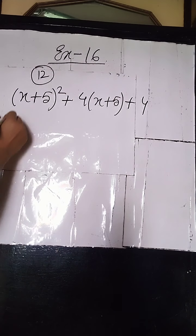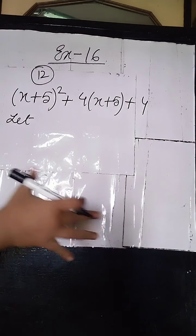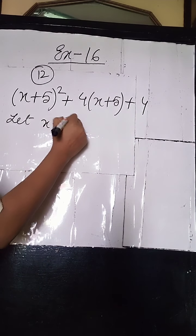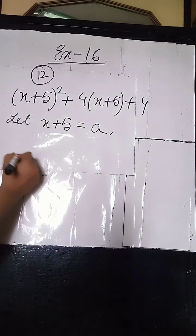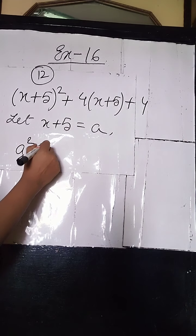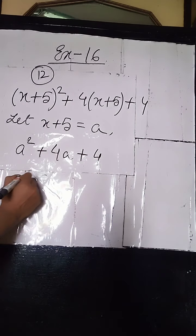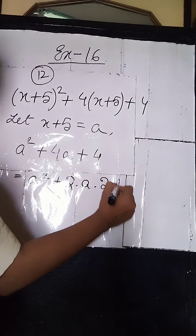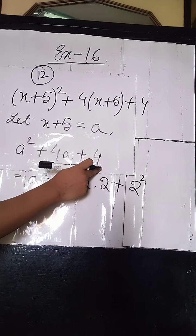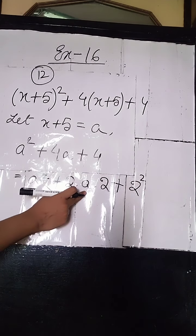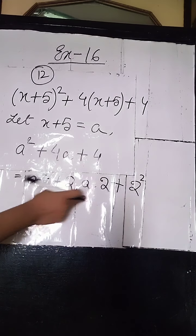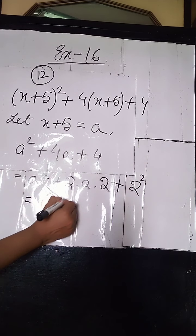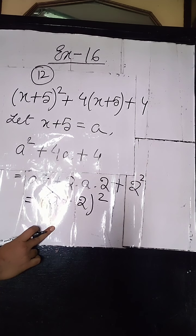How will we solve? Same method as sum number 11 — we assume x plus 5 as A. Then the sum becomes: A squared plus 4A plus 4. That means A squared plus 2 into A into 2 plus 2 squared, since 4 is 2 squared and 2 into A into 2 gives 4A. This is just the formula of A plus 2 whole square.